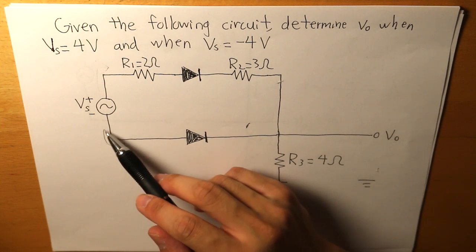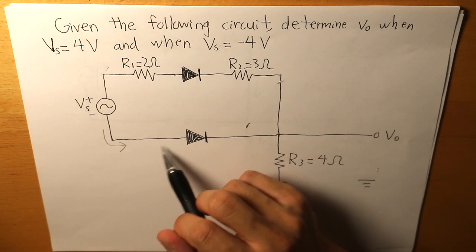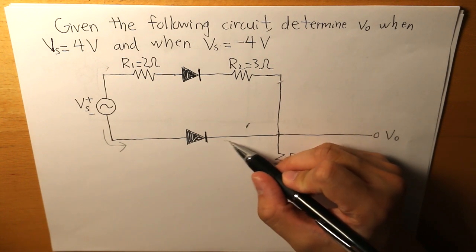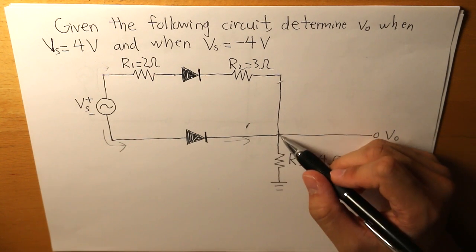But continuing on, so the current travels in this direction. And this diode will be turned on. So this current goes through this node.